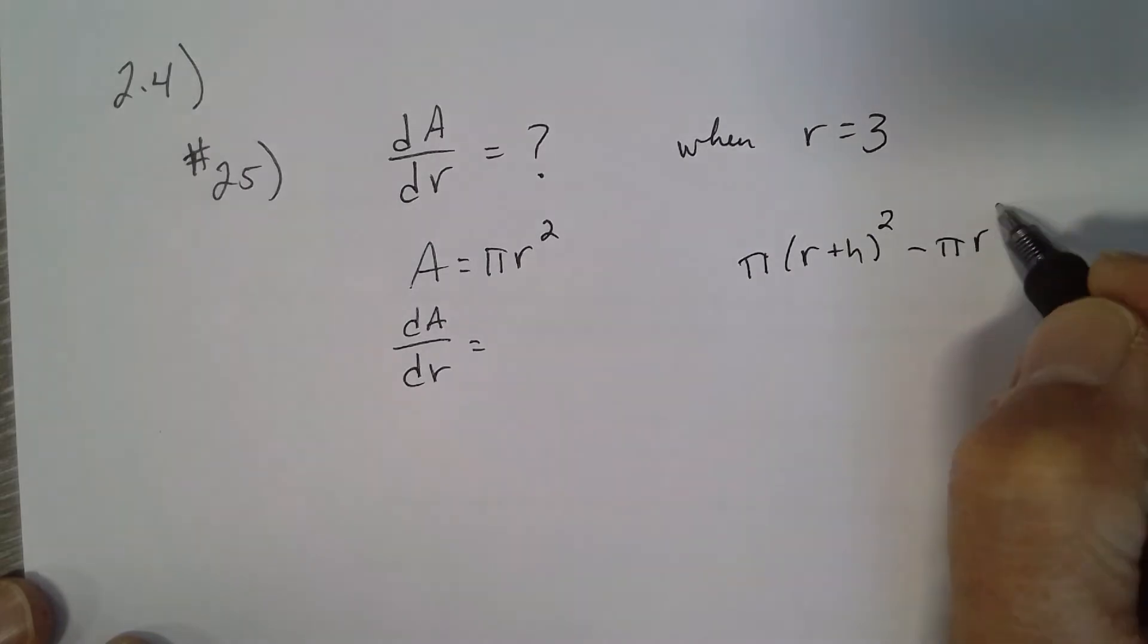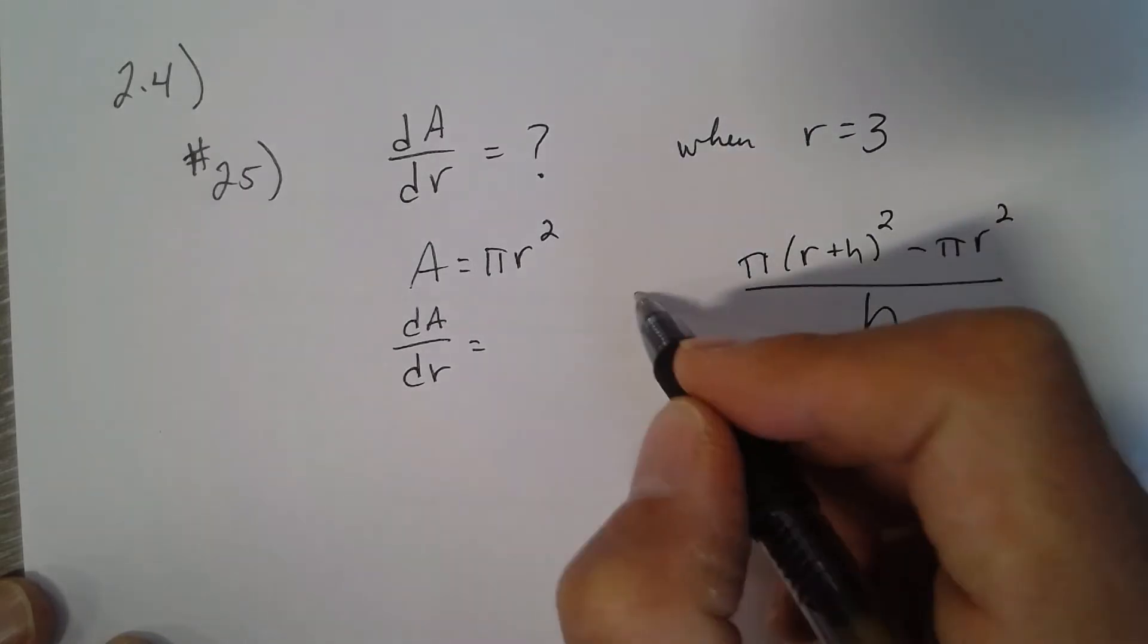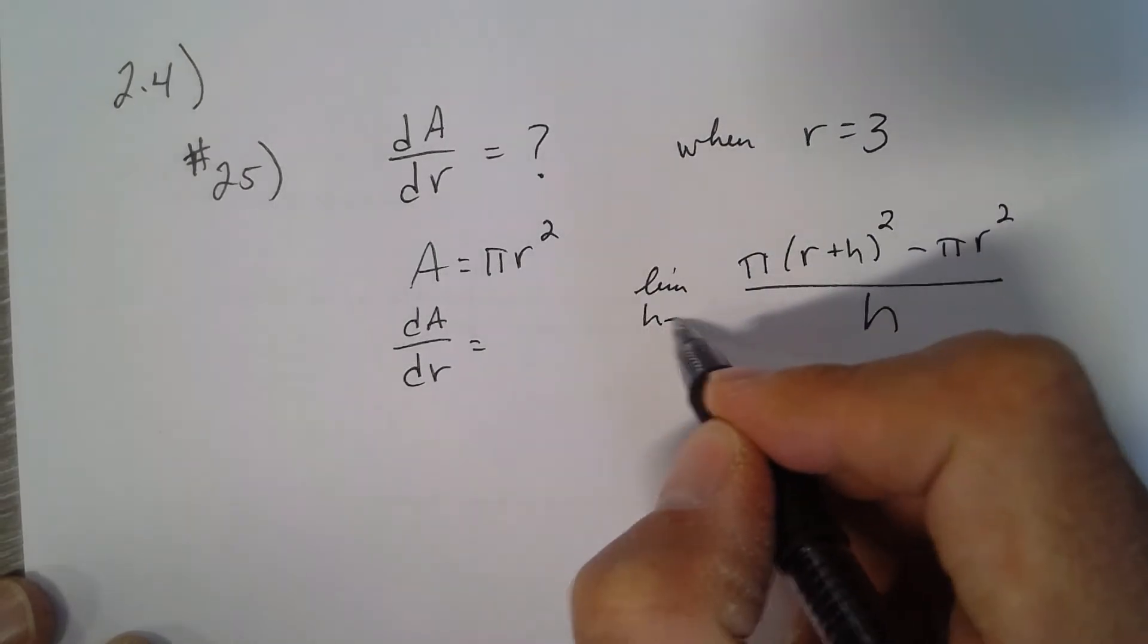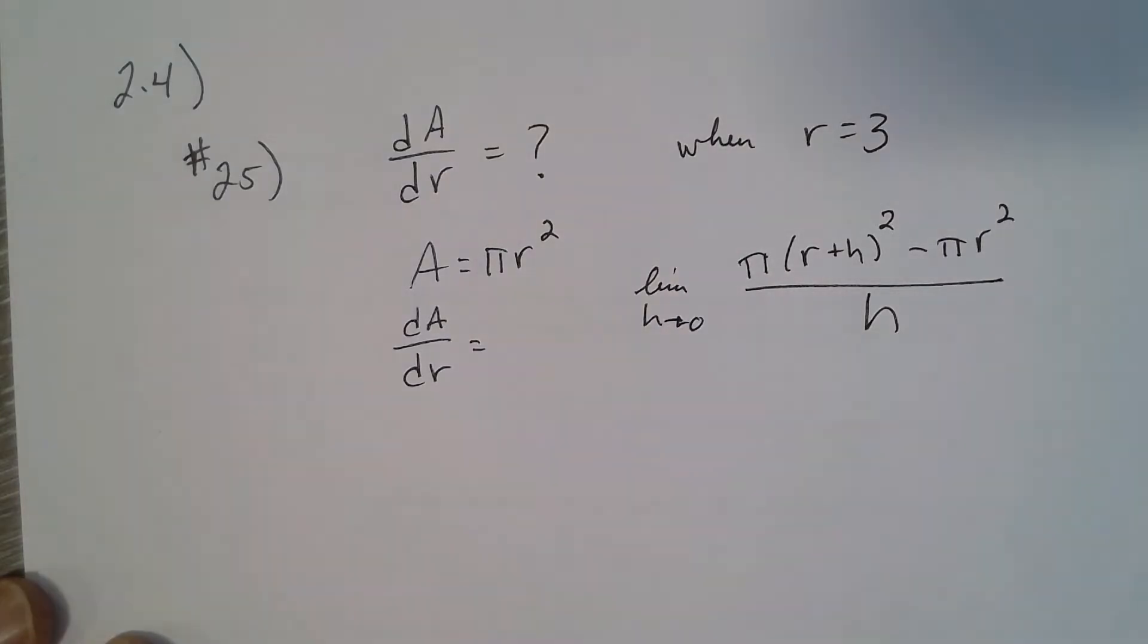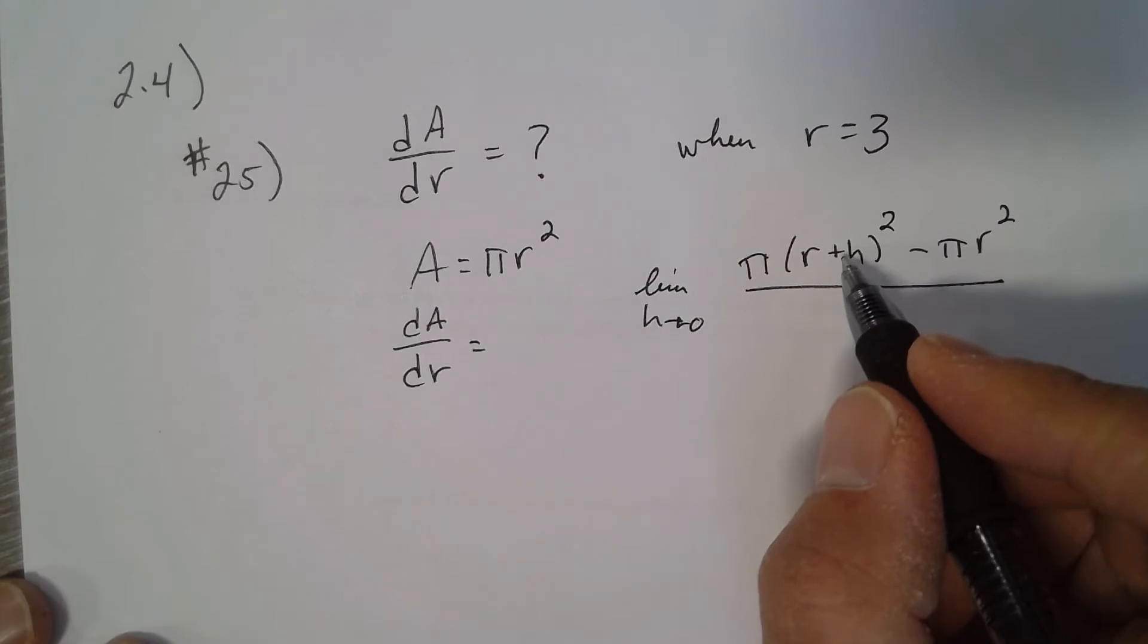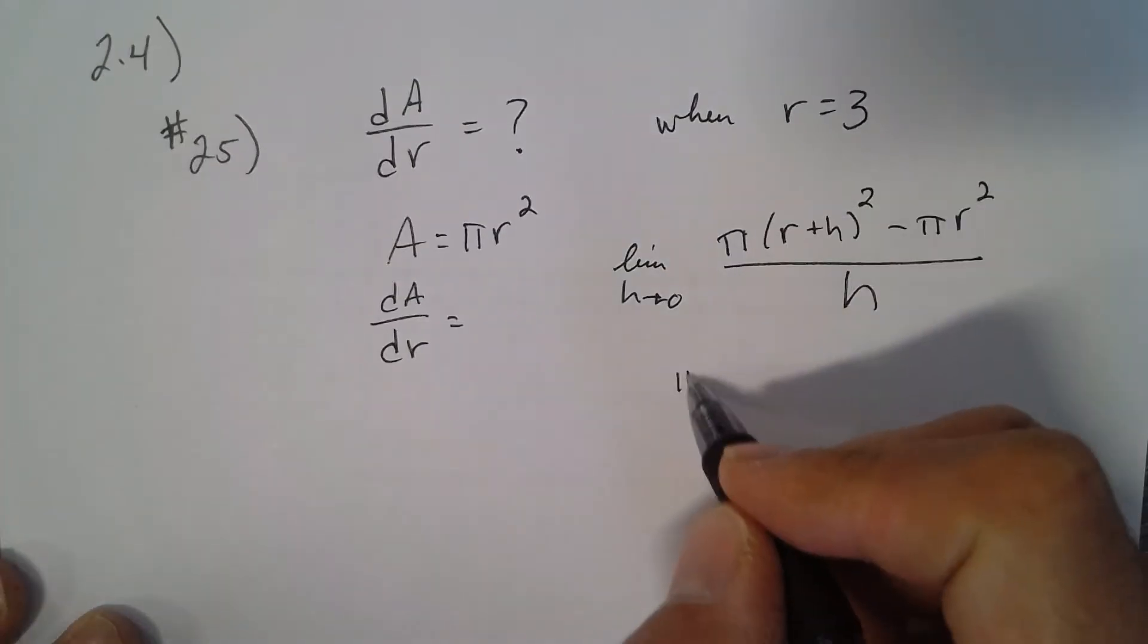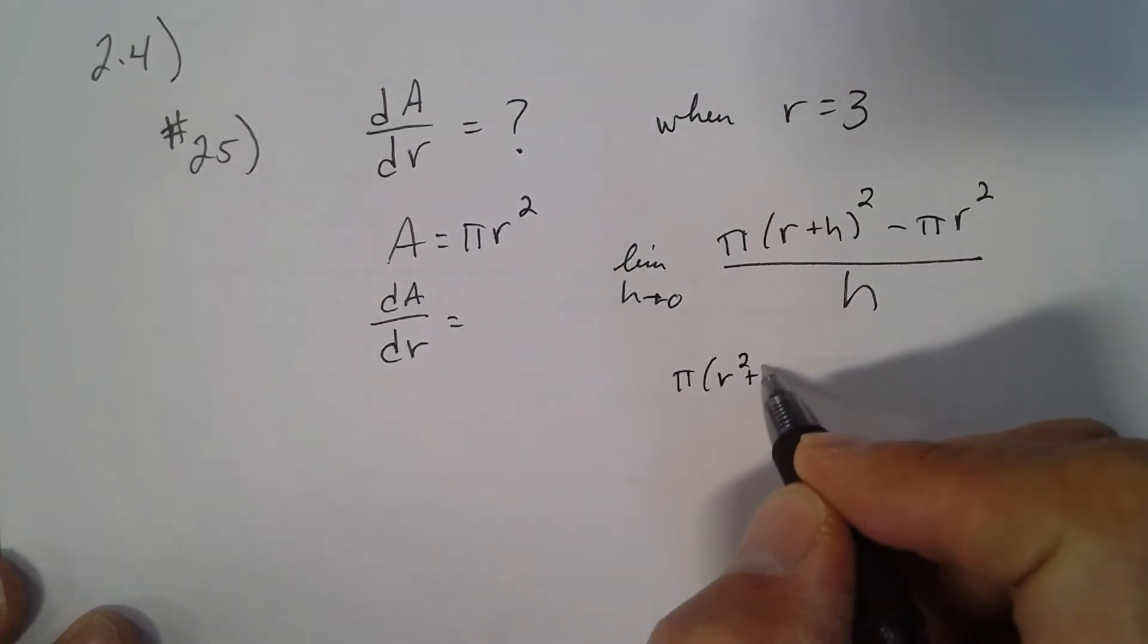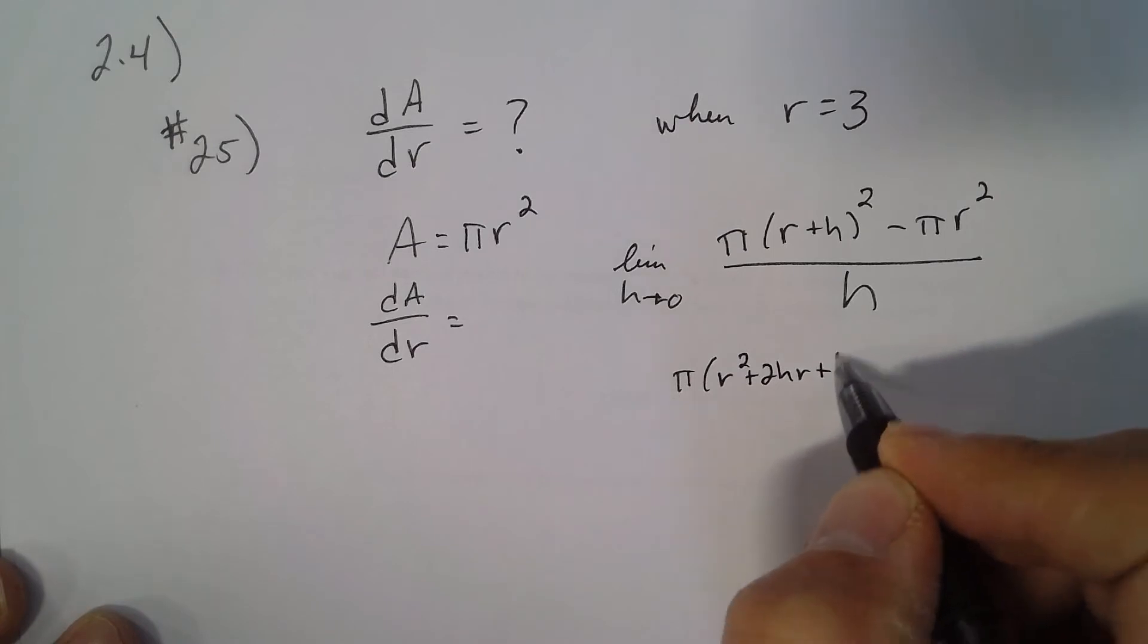...over h as h goes to 0. Expanding (r+h)²: it'd be r² + 2hr + h².